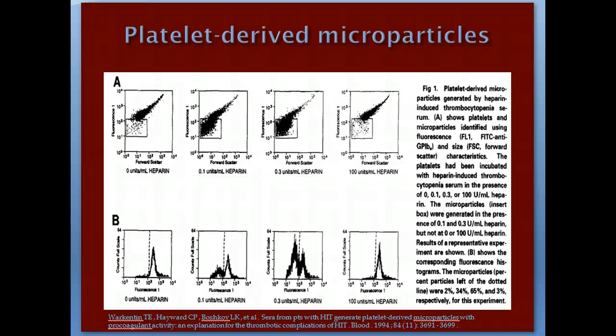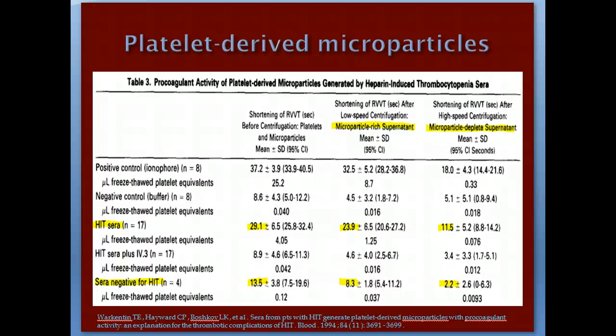Proving that platelets secrete procoagulant microparticles: when HIT antibody was added to platelets at different heparin concentrations, there was very minimal secretion at zero heparin, maximal secretion at the therapeutic range of 0.1 to 0.3 units per mL, and minimal secretion again at very high heparin doses. This confirms that too high or too low heparin will not induce HIT. The microparticles proved procoagulant by shortening the RVV time (Russell-Viper-Venom time) by 23 seconds in microparticle-rich solution versus 11 seconds in microparticle-depleted solution.